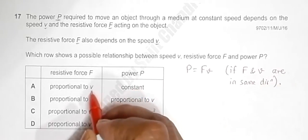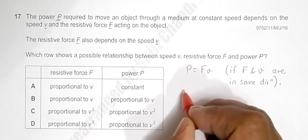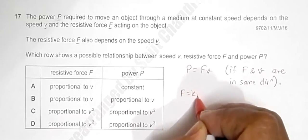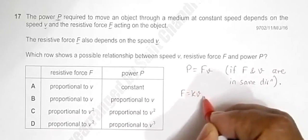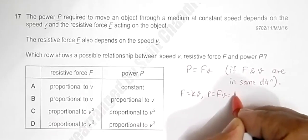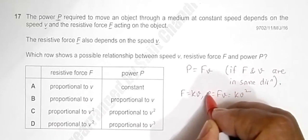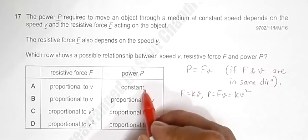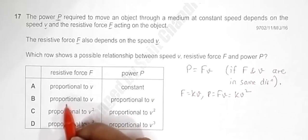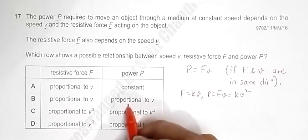In this option, F is proportional to V, so F equals KV. That means power equals F times V equals KV squared, so power is proportional to V squared. This is not correct for that option.